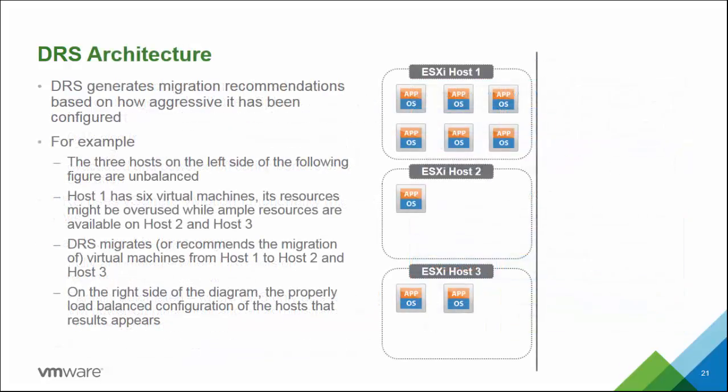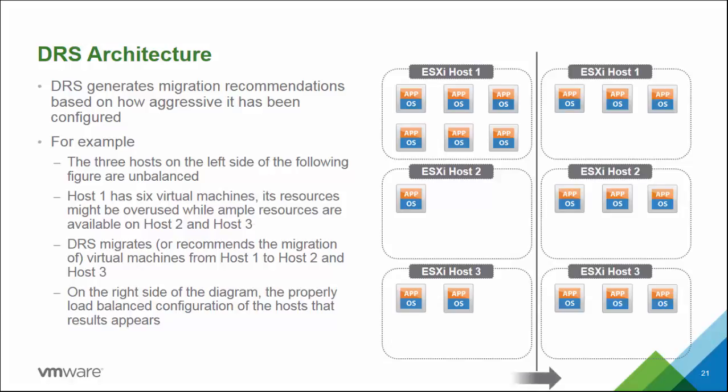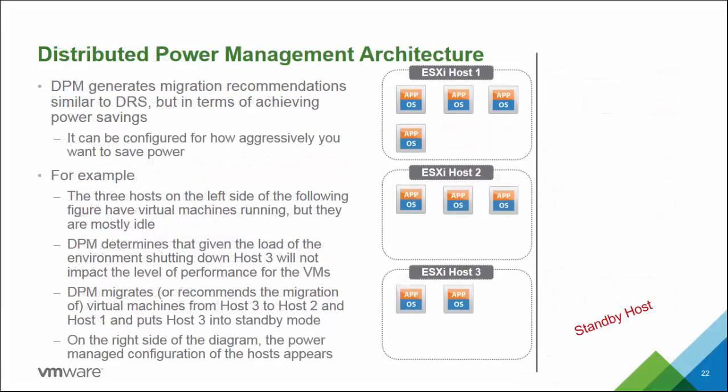Looking at DRS from a high level: in this example I have three ESXi hosts — host one has six virtual machines, host two has one, and host three has two. There's a clear imbalance. When DRS is enabled in fully automated mode, it rebalances these virtual machines across the hosts. In this simplified view, DRS redistributes to three VMs on each host, achieving a more even distribution of workload.